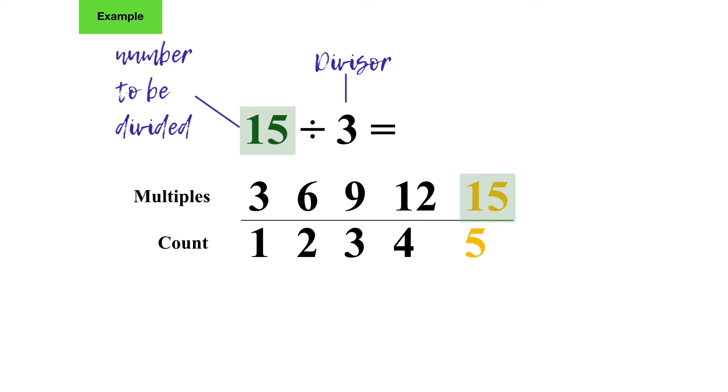Count on your hand again to see: 3, 6, 9, 12, 15. I've got five fingers raised, which means my answer is 5. So 15 equally divided by 3 will be 5.